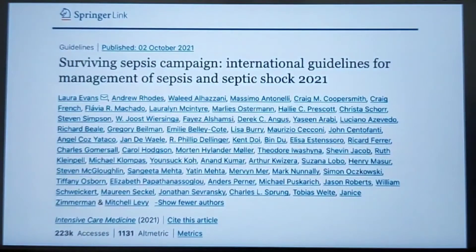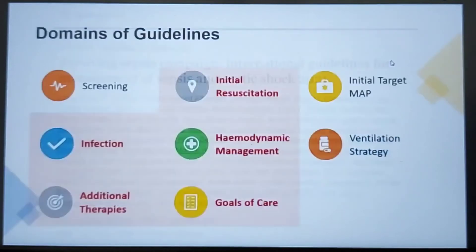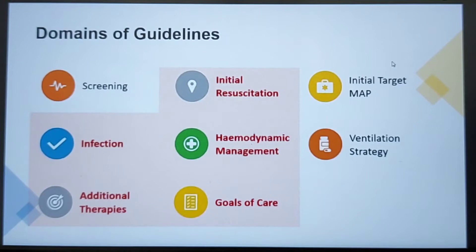This is the guideline being discussed today. It's published in SpringerLink and has been uploaded to the on-call Passover group. The 2021 guidelines consist of eight domains, and I will be touching on all of them, focusing on the ones highlighted in pink.